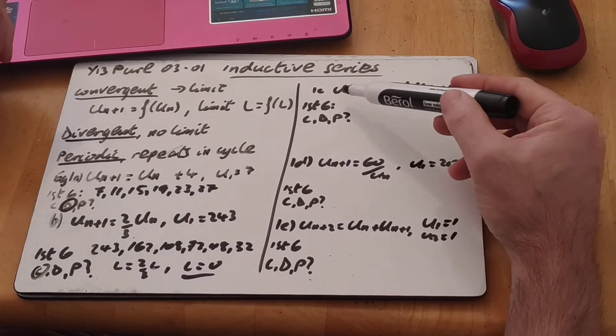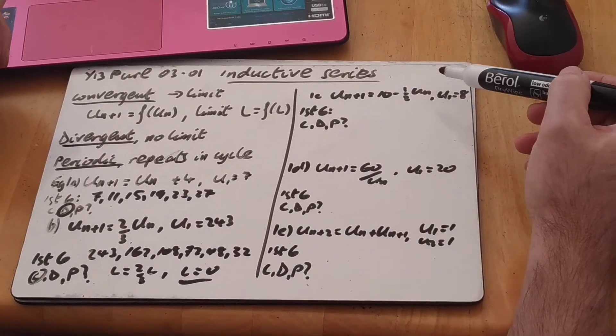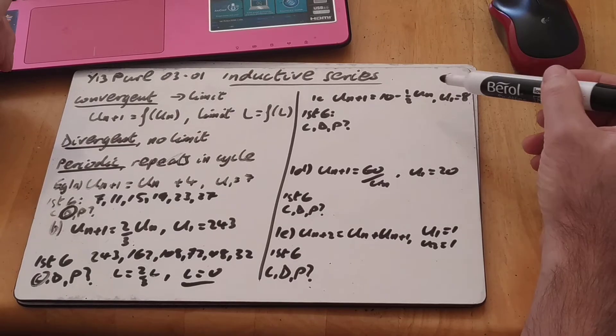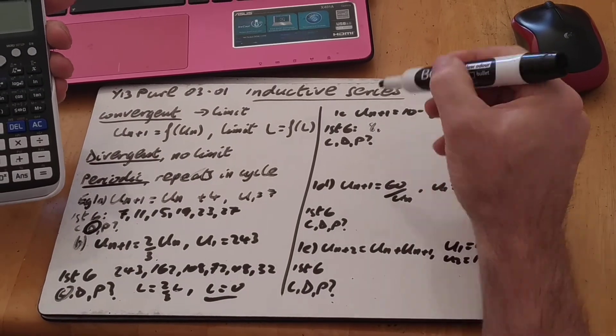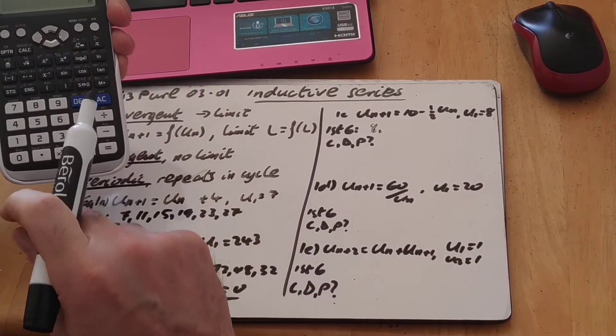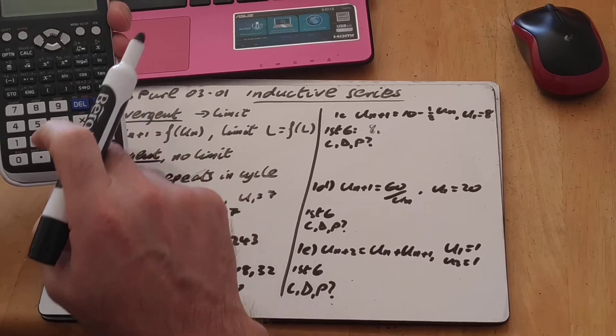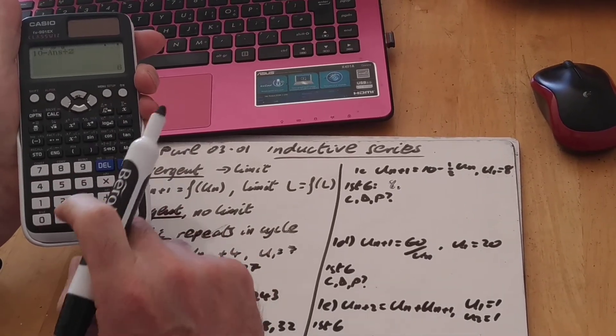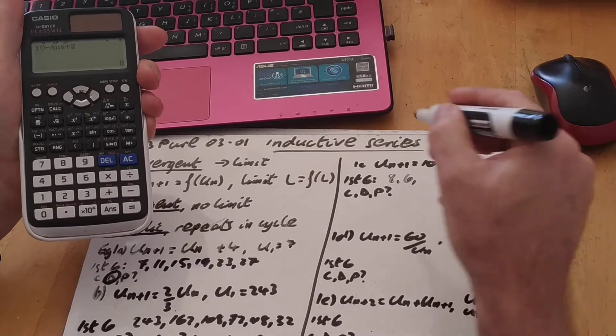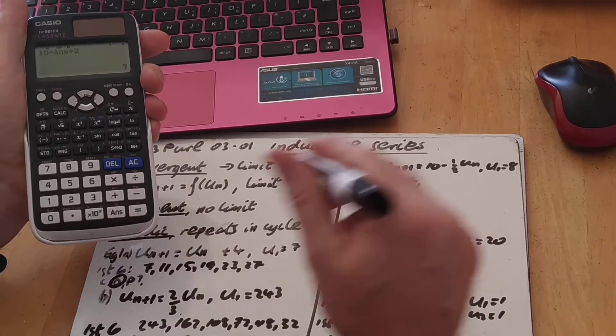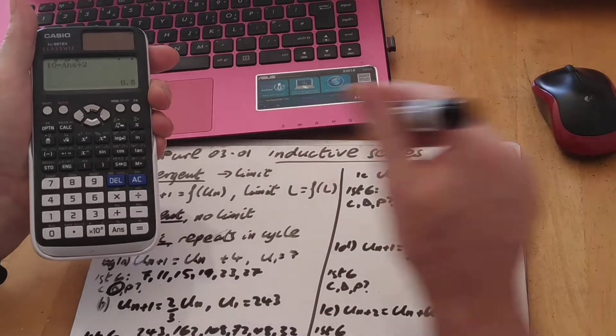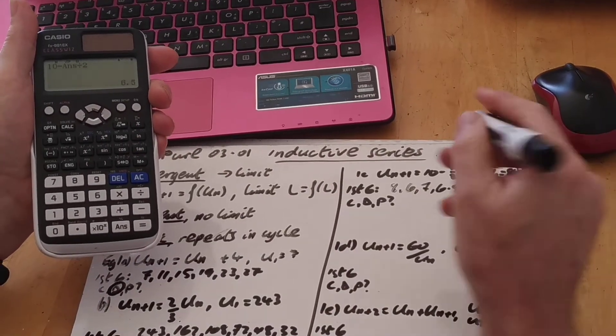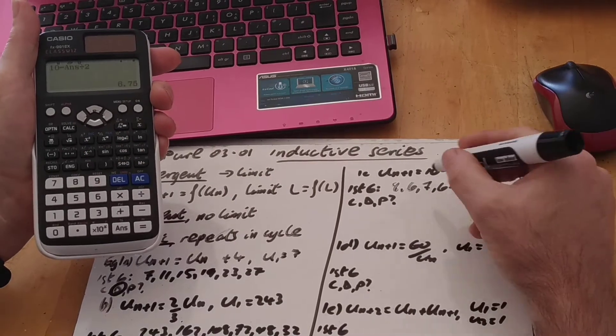Third example, then, 1c. u of n plus 1 equals 10 minus a half of u n. In this case here, I can do the same thing if I wanted to, I could type in my initial value, the first 6, so 8 is the first one, and then 10 minus answer divided by 2 equals 6, and then stick 6 in, equals 7. Stick 7 in, equals 6.5.